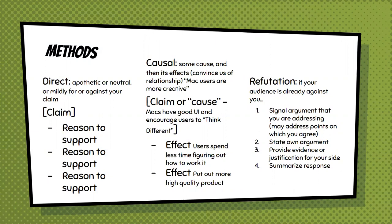Your causal method: some cause and then its effects — you have to convince us of the relationship between them. So your claim or cause: Apple computers have a good user interface and encourage people to, quote unquote, think different. The effect: users spend less time figuring out how to work it, they put out more high-quality product, and therefore Mac users are more creative.